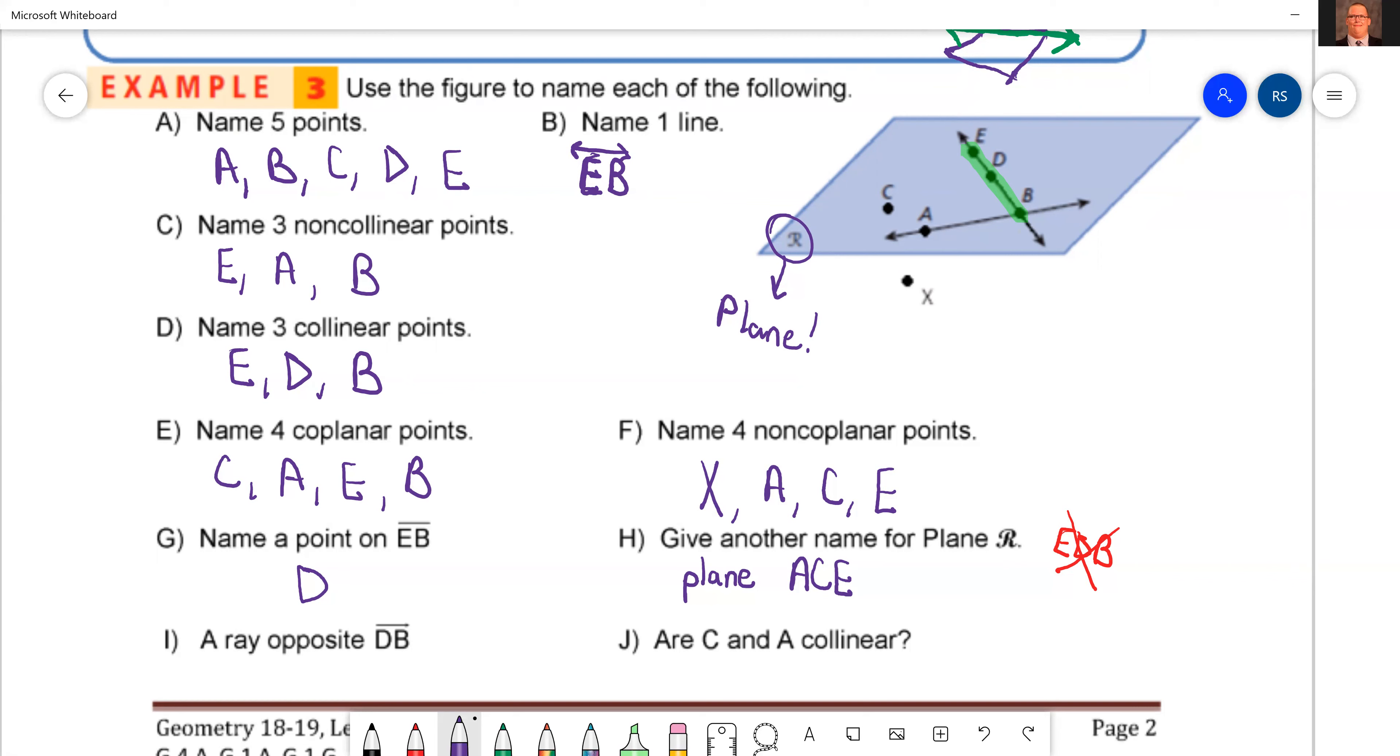Now I ask for a ray opposite of DB. So we're the opposite. So DB is right there. We want to go the opposite direction. So we've got to start at D, we have to start at D. That's non-negotiable. Got to start at D. But then we want to go in the opposite direction. If we do that, what point will we go through? We'll go through, start at D, we'll go through E. Ray D, E.